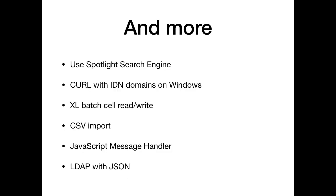You can use the Spotlight search engine to find files on your Mac or iOS device. We can use domains with Asian characters or umlauts with curl on Windows. Our functions to read and write Excel documents without having Microsoft Excel got an upgrade — not just reading and writing cells, formats, and fonts, but you can also batch-write cells. If you have a list with a thousand values, you can put them into an Excel document with just one call to the plugin.